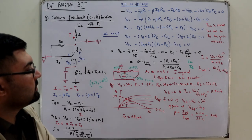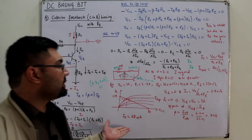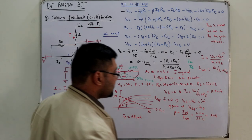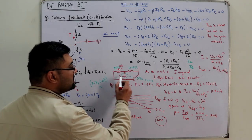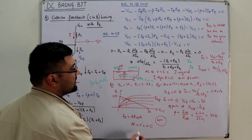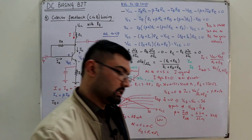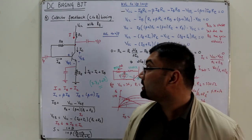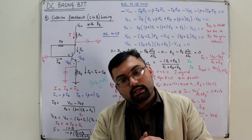I went through this rather quickly, and I apologize for the speed. As a reminder: when the base resistance is split with a capacitor between two parts in series, in DC analysis the capacitor is open circuit so RB = R1 + R2. That is it for the collector feedback biasing configuration. I will see you in the next video. Take care, goodbye.